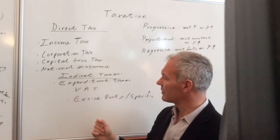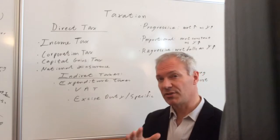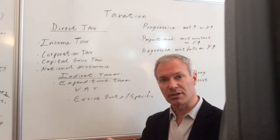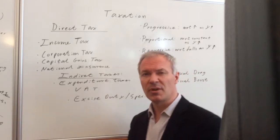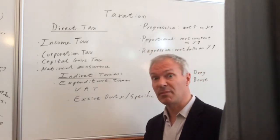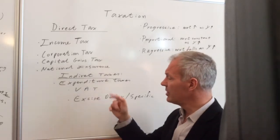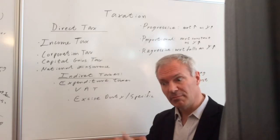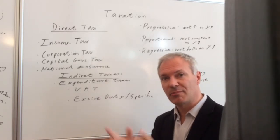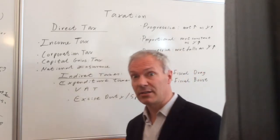Indirect taxes — the key taxes are VAT, which is sometimes known as an ad valorem tax. That's a percentage tax on most products, apart from children's clothes, food, and reading matter such as newspapers and magazines. VAT, however, can be passed on, so the incidence of the tax can be passed on to the buyer to some extent, which is the sort of thing you analyse in microeconomics.